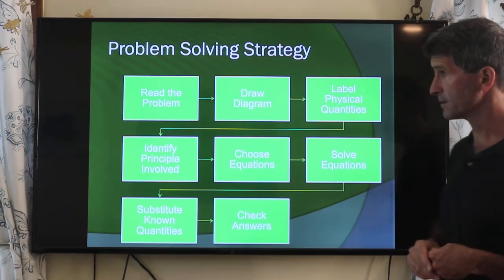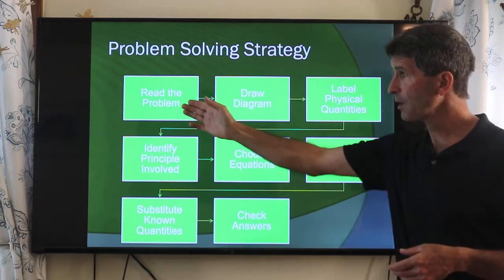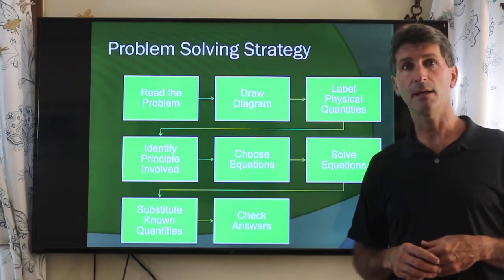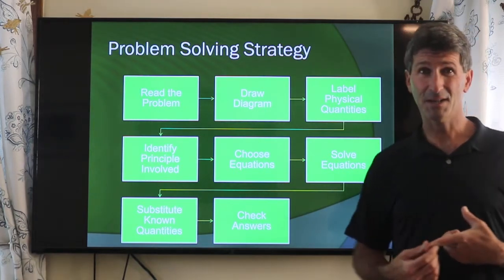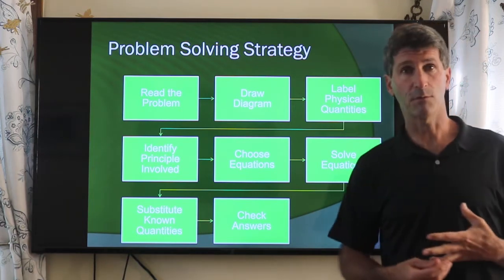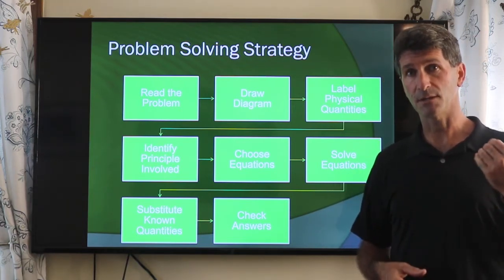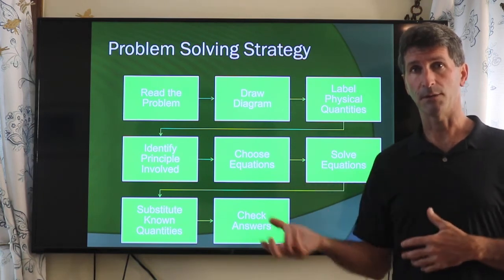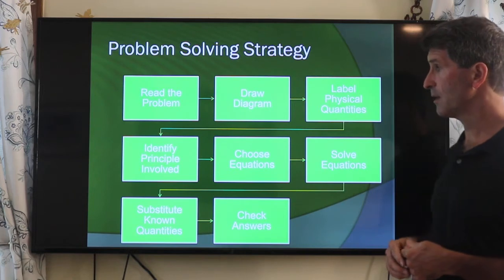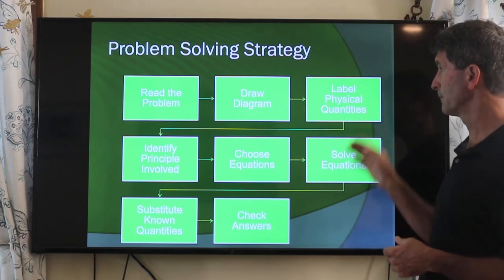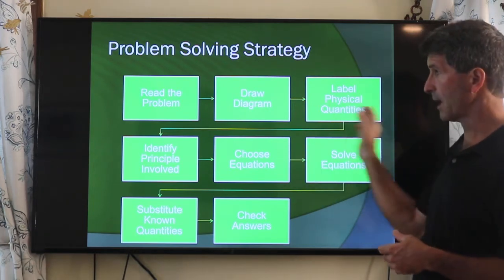Label all the physical quantities. You've read the problem. What do they give you in terms of information? What was the initial velocity? What is the acceleration? What are forces? All these different quantities, you need to label these quantities and try to incorporate them onto your diagram or list all of your knowns. Now, you've set out what's going on.